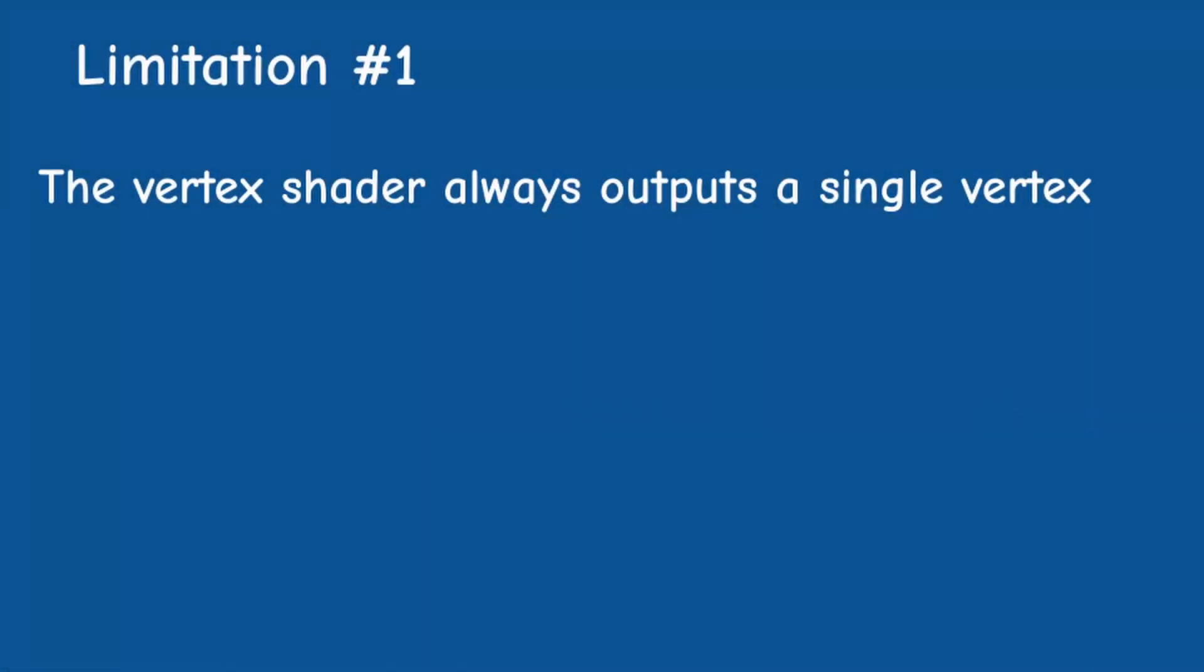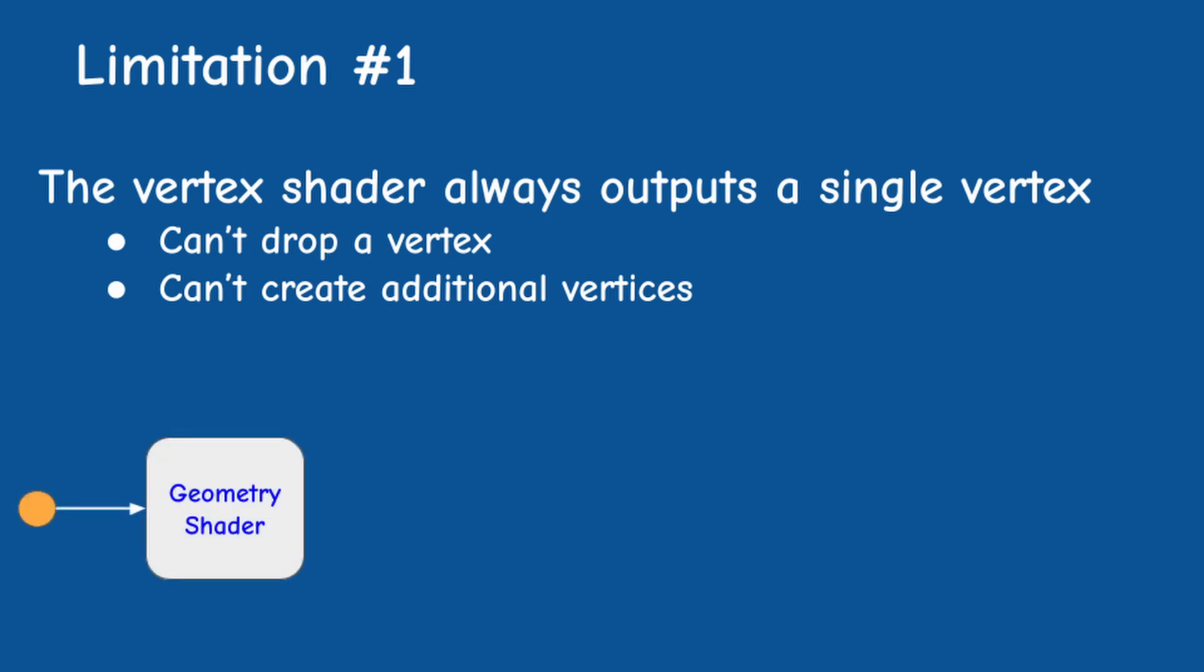First of all, the vertex shader always outputs a single vertex. It cannot drop the vertex if it wants to, nor can it create new vertices. The geometry shader can do both. You can decide to get rid of the vertex entirely, and you can also create new geometry by outputting multiple primitives for every vertex.